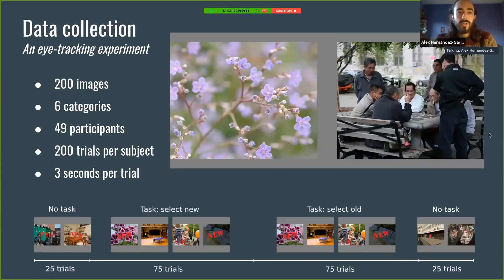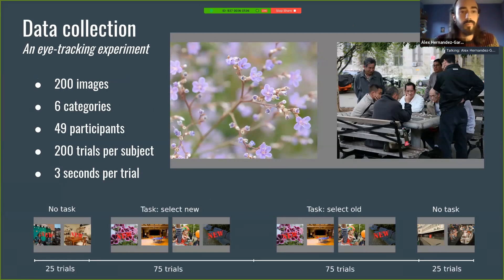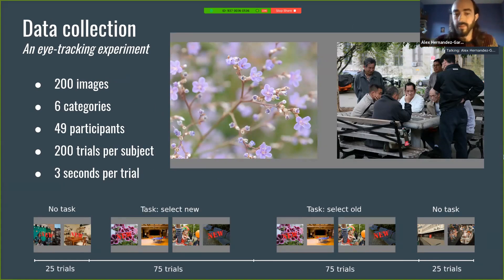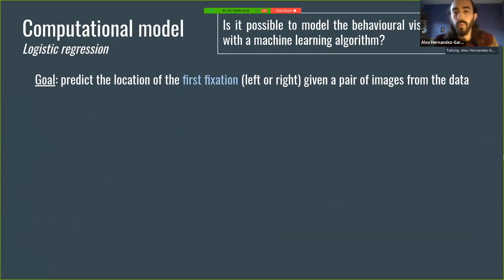About the data collection: we performed an eye tracking experiment with about 200 natural images from six different categories, almost 49 participants, and 200 trials per subject. In some trials, we varied a small task the participants had to perform. We also mixed new with old images to get variability to study these factors.